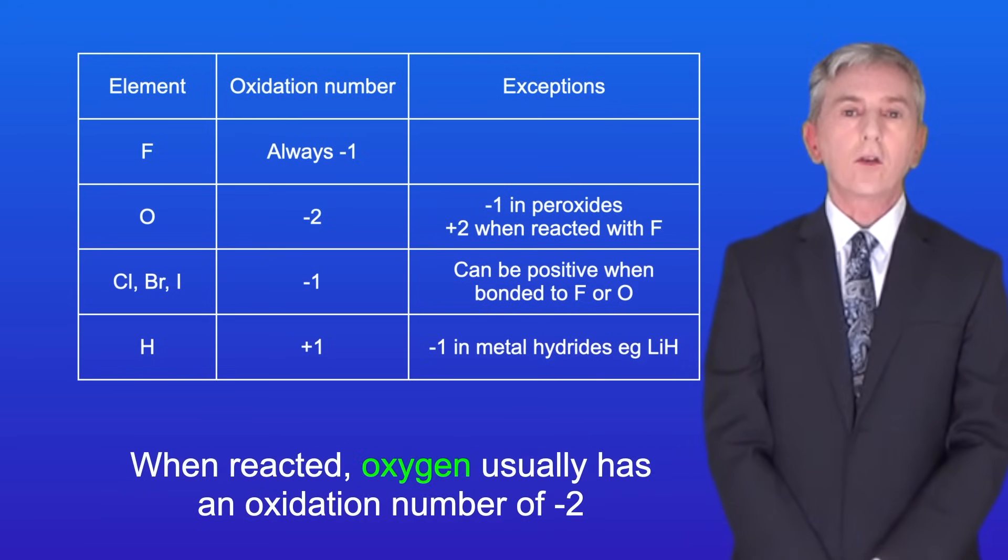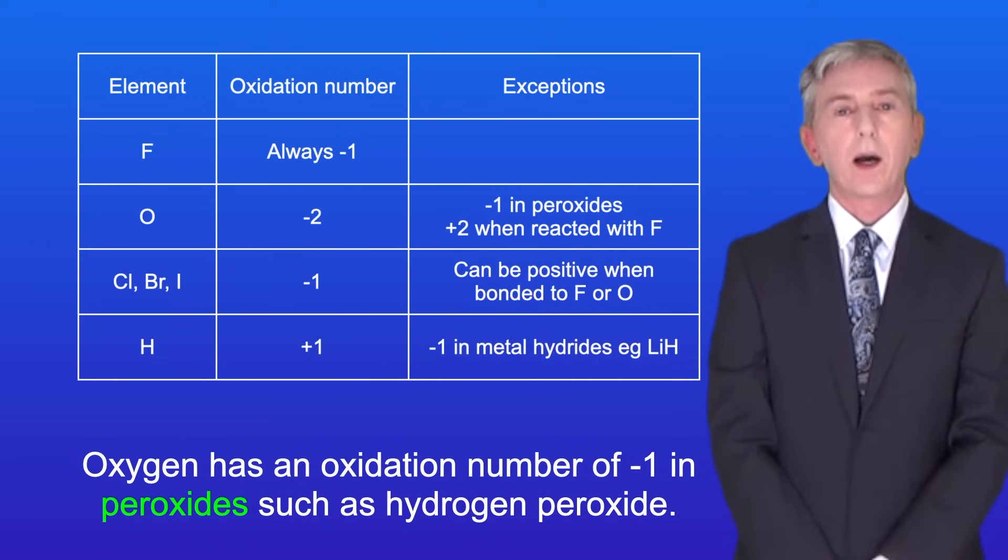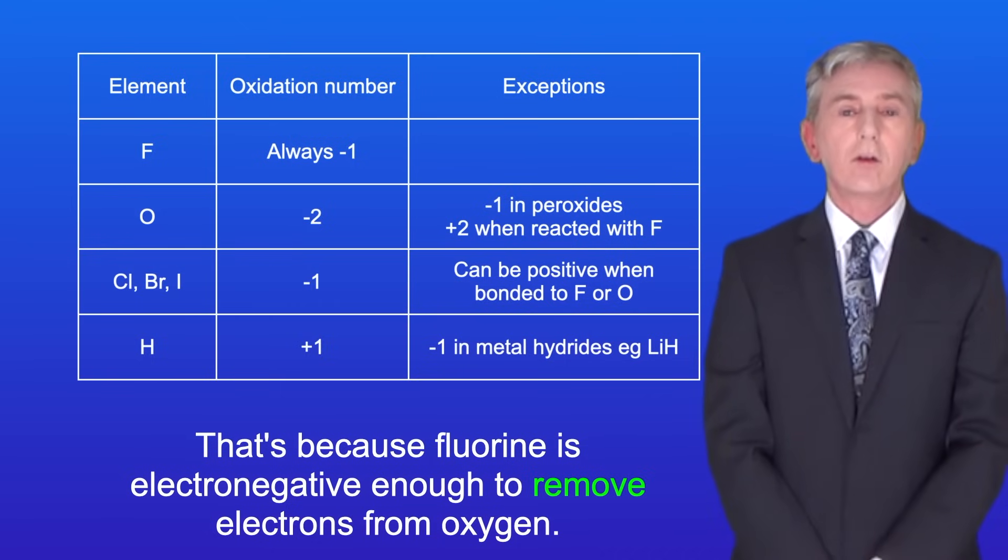When reacted, oxygen usually has an oxidation number of minus two. However, there are two exceptions which you need to know. Oxygen has an oxidation number of minus one in peroxides such as hydrogen peroxide. And when reacted with fluorine, oxygen has an oxidation number of plus two. That's because fluorine is electronegative enough to remove electrons from oxygen.